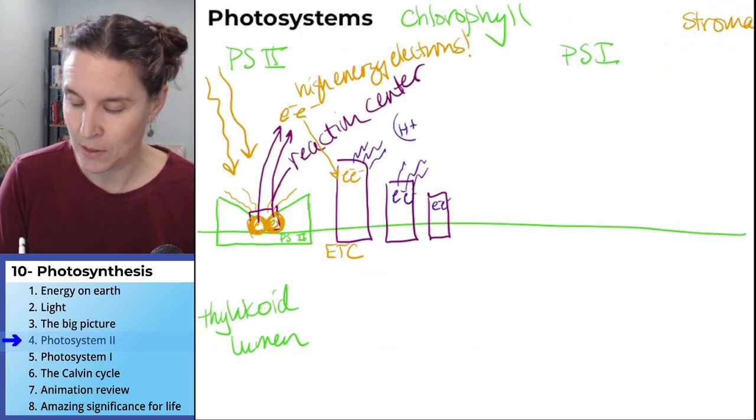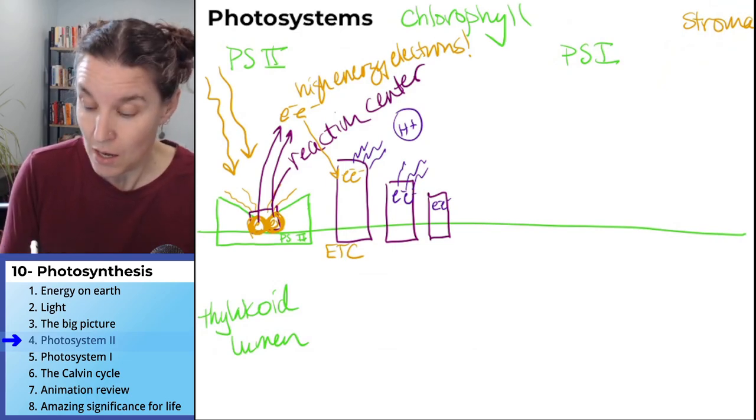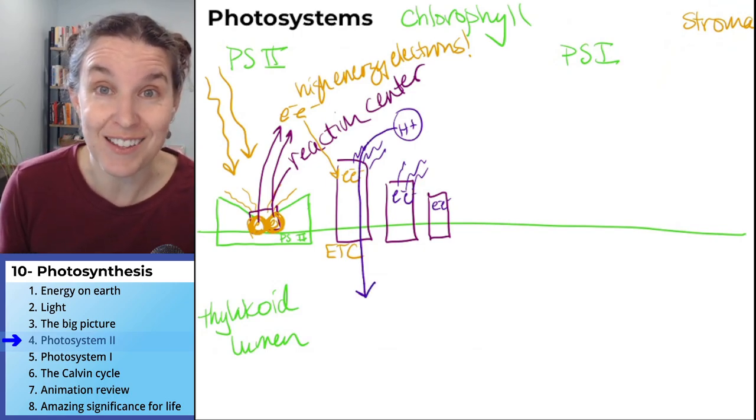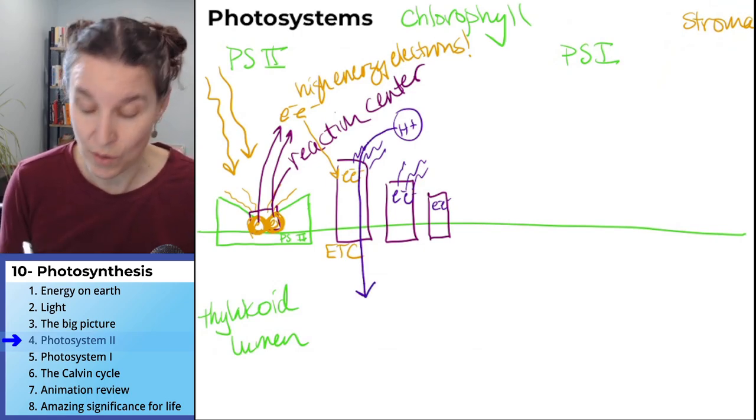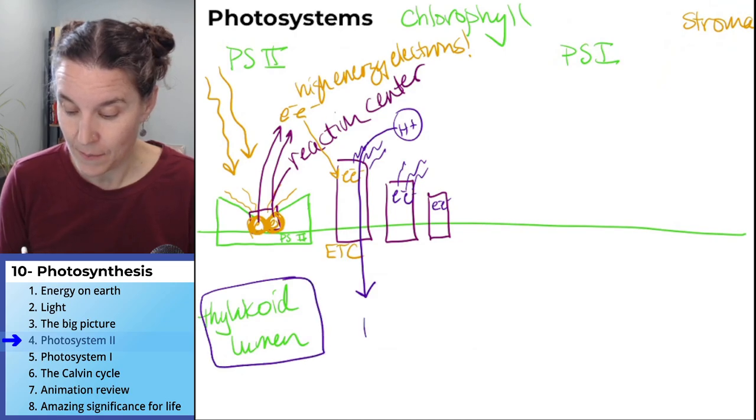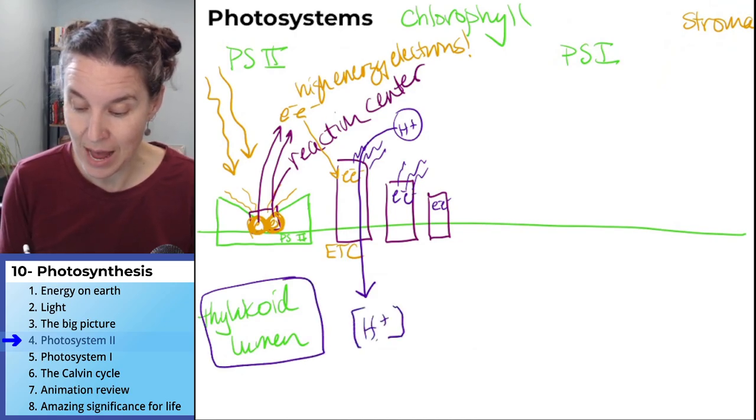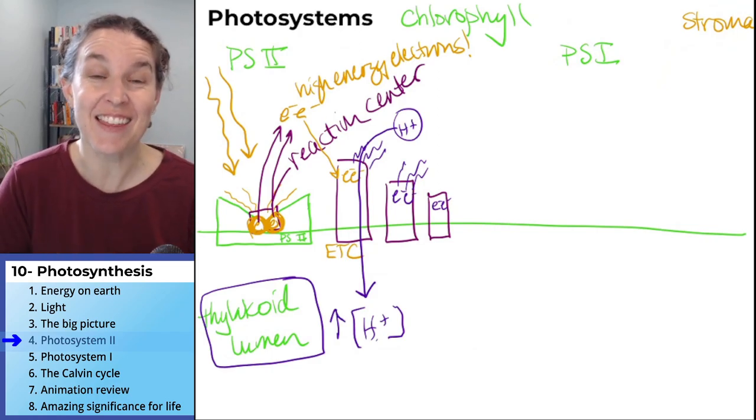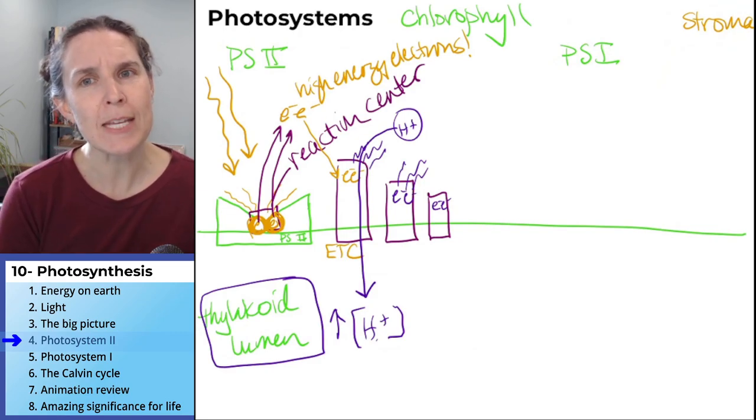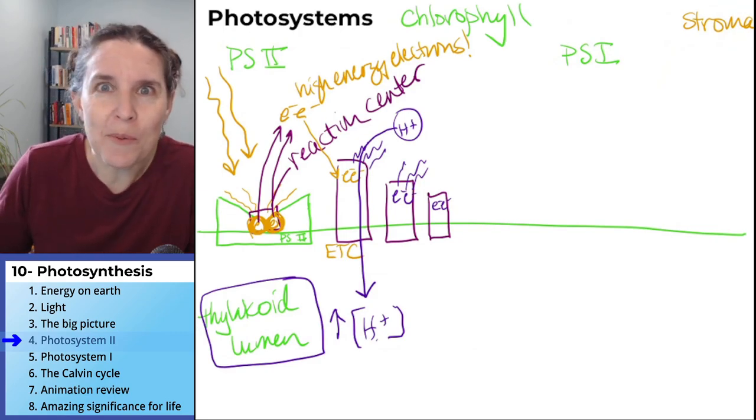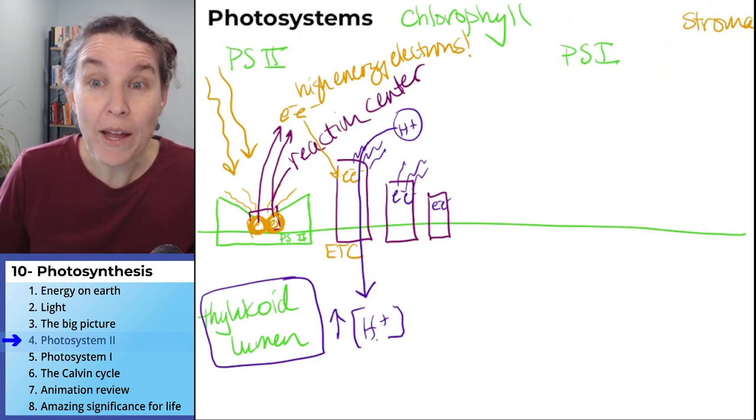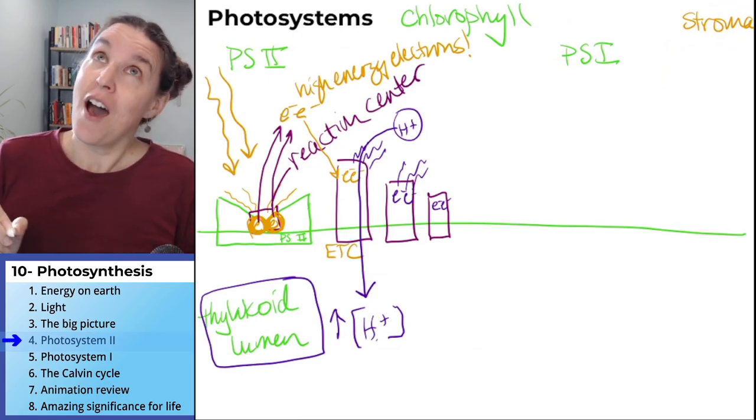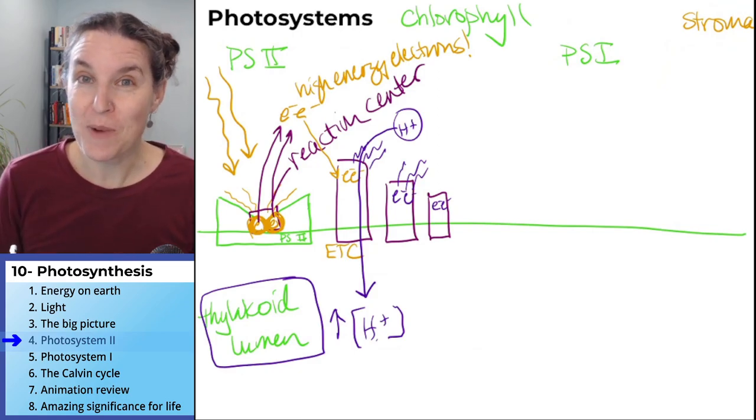This time we're pumping, we're using the energy to pump hydrogen ions or protons into the thylakoid lumen. We are creating a high concentration of hydrogen ions inside the thylakoid lumen. Why would we want that? What good is a hydrogen ion concentration gradient? Who am I going to draw next? Next, I would get ice cream for whoever can guess who's this guy.